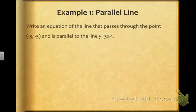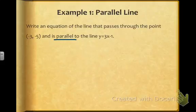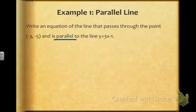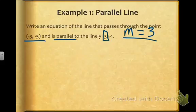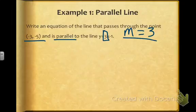For example: write an equation of a line that passes through the point negative 3, negative 5, and is parallel to the line y equals 3x minus 1. This is going to be exactly like problems we did in sections 5.2 and 5.3. The only difference is we have to figure out that because we are writing the equation of a line that is parallel, we know if this equation has a slope of 3, our equation also has to have a slope of 3. Given a slope and given a point, I would prefer our final answer to be in slope intercept form, so I'll use point slope form to get there.